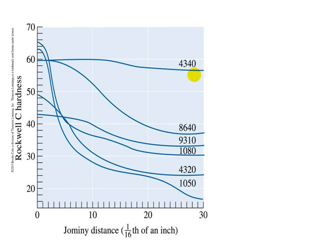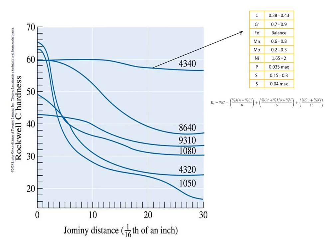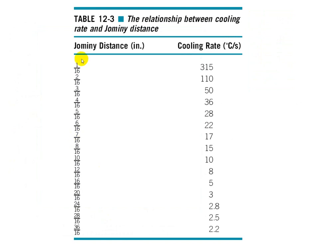That means 4340 at very slow cooling rate still there is a very good possibility of getting 100% martensite. So this refers to a very hardenable alloy.